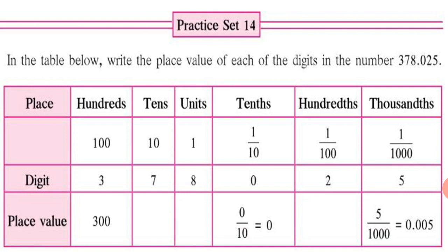Now, first we will have to understand the place. We have 100s, 10s, units, 10s, 100s and 1000s place. So, how do we write it as 100s? 100s place is 1 and 2 zeros. 10s place we write as 1 and 1 zero. Units place is just 1. 10s place is 1 upon 10. 100s place is 1 upon 100. This is after decimal point. And 1000s place is 1 upon 1000.